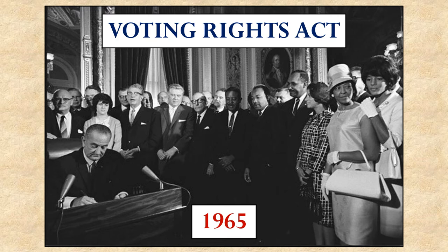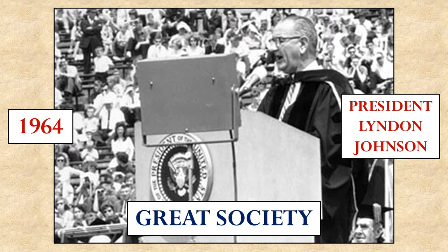Even as Lyndon Johnson championed the Civil Rights Act of 1964 and the Voting Rights Act of 1965 — both important pieces of legislation — he had even grander ambitions for the country. In 1964, at a graduation ceremony at the University of Michigan, Johnson gave a speech outlining what he called the Great Society that he imagined transforming America into. He wanted to tackle both poverty and racial injustice in the United States and end them forevermore through a series of government programs.